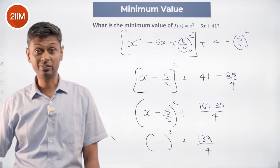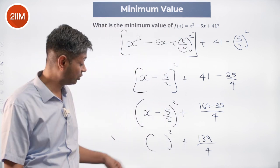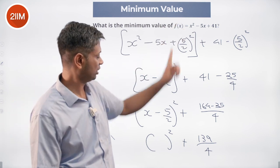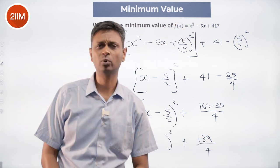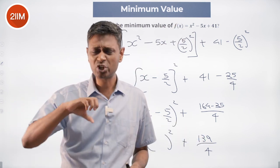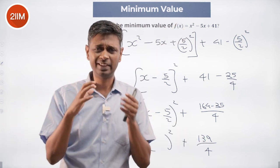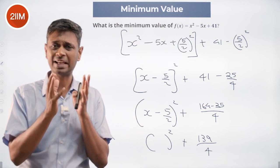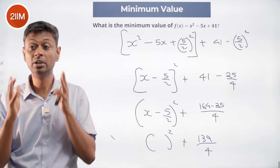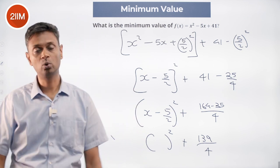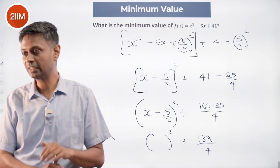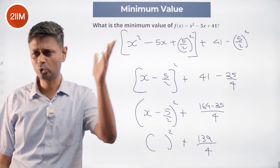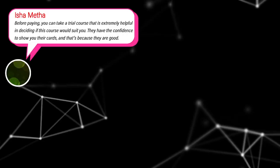A square term cannot be negative, so the smallest value it can take is zero. Therefore, the smallest value that the expression can take is 139/4. By completing the square — taking the quadratic expression, completing the square, and having a balancing term — we find the minimum value is 139/4.